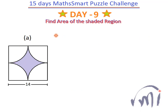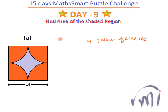The first problem asks us to find the area of the shaded region. The outer boundary is a square and each of the four curved sections is a quarter of a circle. If I subtract four quarters of circles from the area of the square, I get the area of the gray shaded region. Four quarters together make a complete circle whose radius is half of one side of the square, so radius equals 7.